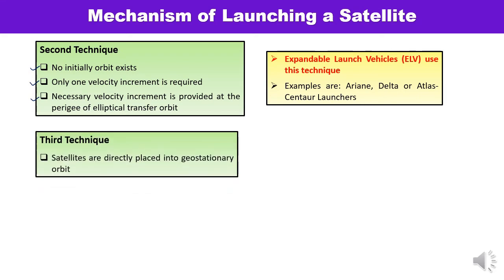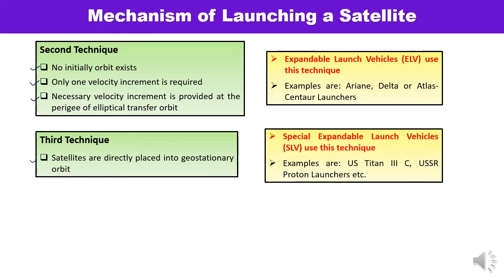In the third technique, satellites are directly placed into the geostationary orbit. This technique is used by special expendable launch vehicles, SLV, with examples being the US Titan 3C and USSR Proton launchers. Since the satellite is directly placed into the geostationary orbit, this technique is reserved for special expendable launch vehicles.